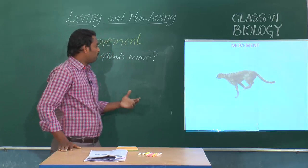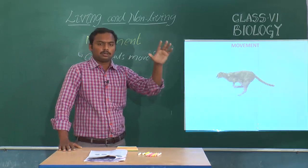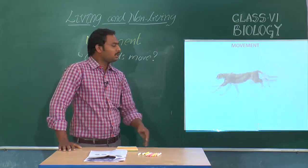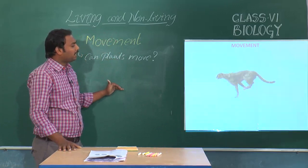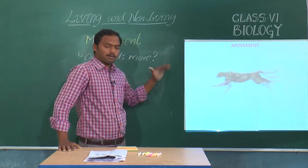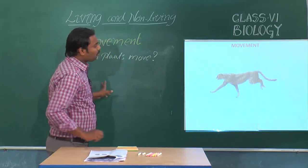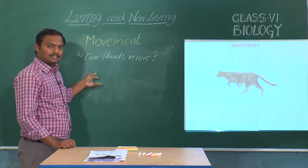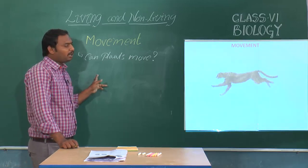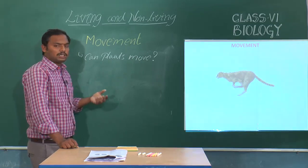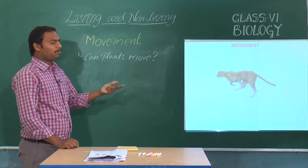You can perform an activity: take a list of things you observe in your day-to-day life, check whether they can move or not, and prepare a table to find the answers. Movement is an important characteristic feature we can see in living forms. All living forms show movement, except plants cannot move on their own, though certain parts of plants can move.